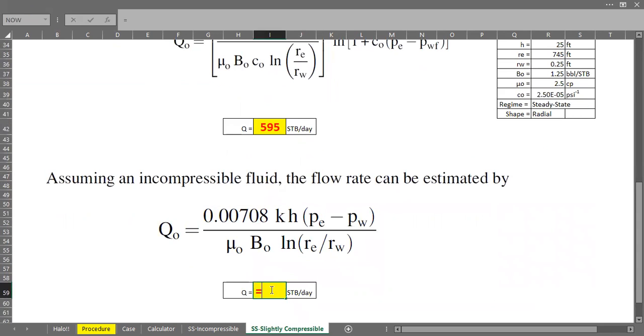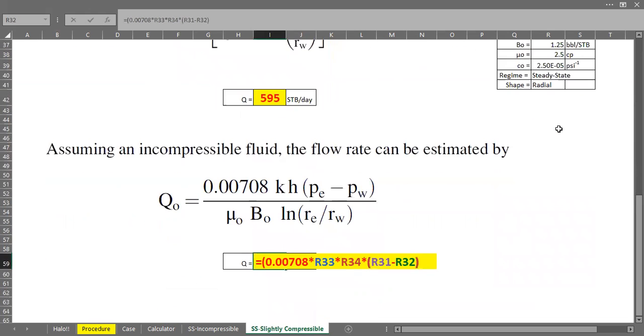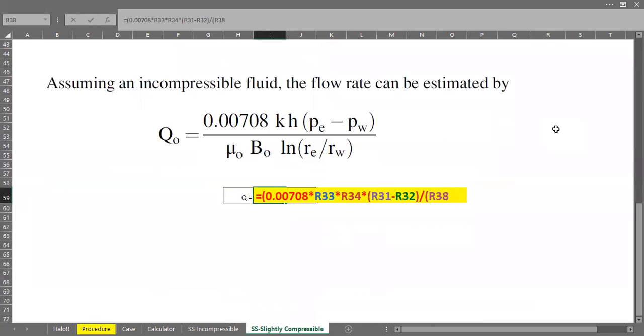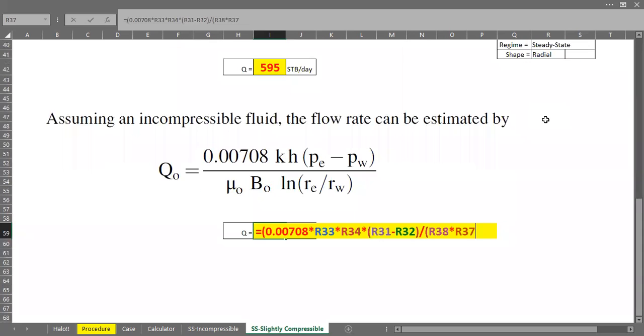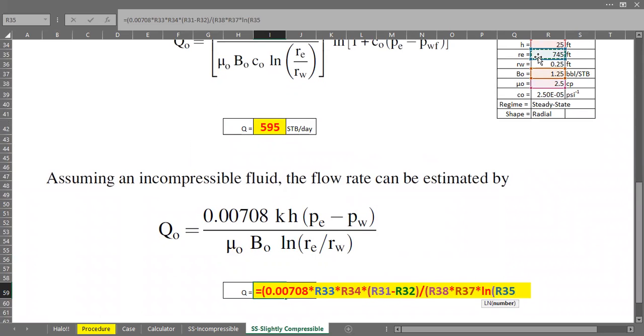So let's calculate. Open parenthesis 0.00708 multiplied by permeability multiplied by reservoir or net pay thickness multiplied by delta pressure, which is Pe minus Pwf. Close divided by the denominator. Oil viscosity multiplied by oil formation volume factor multiplied by logarithmic natural of Re divided by Rw. Close. Close again.